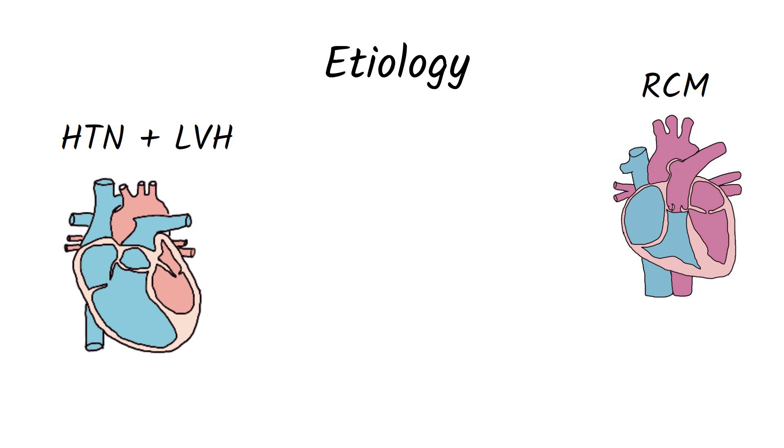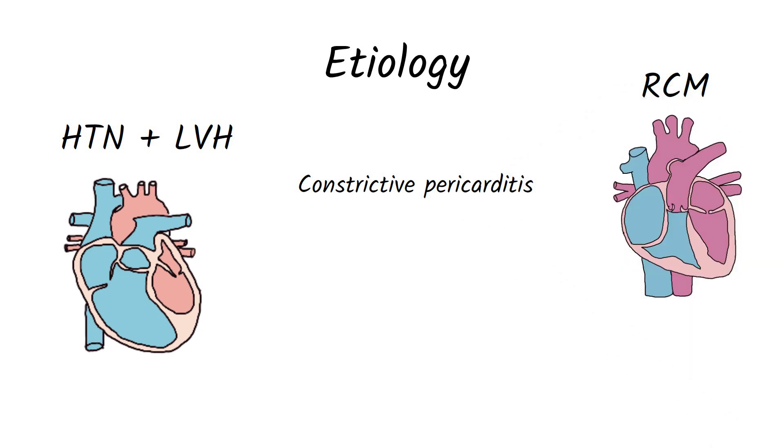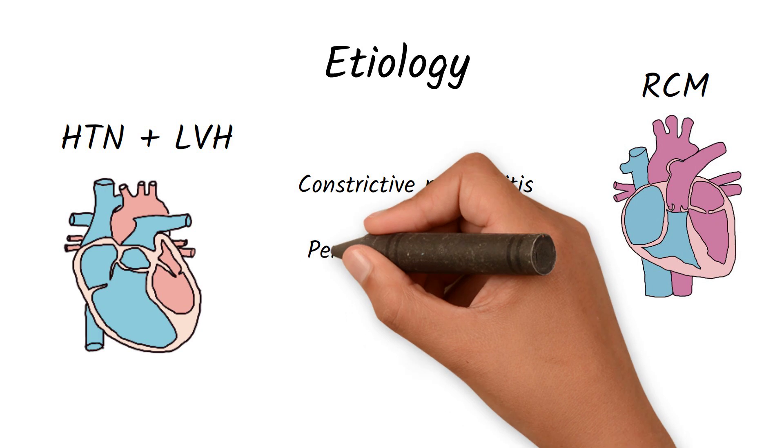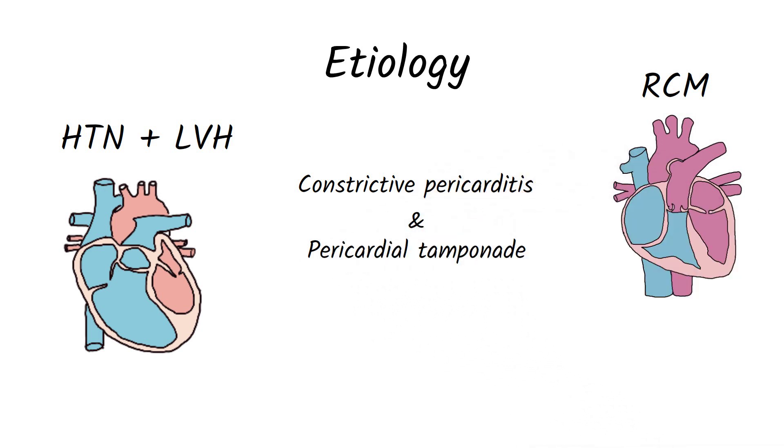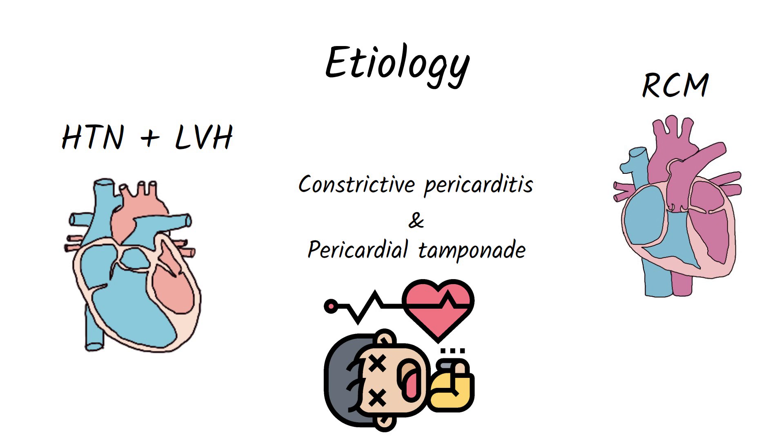It can also be caused by impaired relaxation of the left ventricle, which can be caused by conditions such as constrictive pericarditis, which leads to fibrosis of the pericardium, and pericardial tamponade, a condition that happens when the pericardium fills with fluid, making it difficult for the heart to expand and fill up with blood.